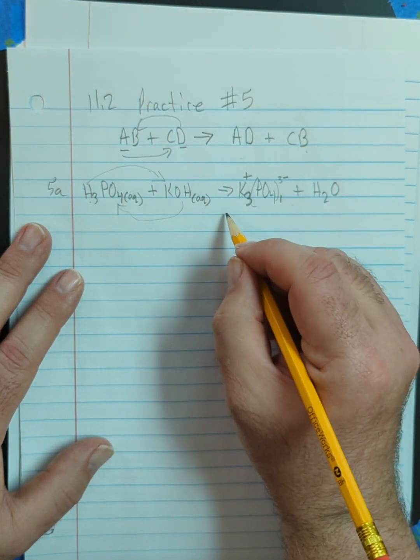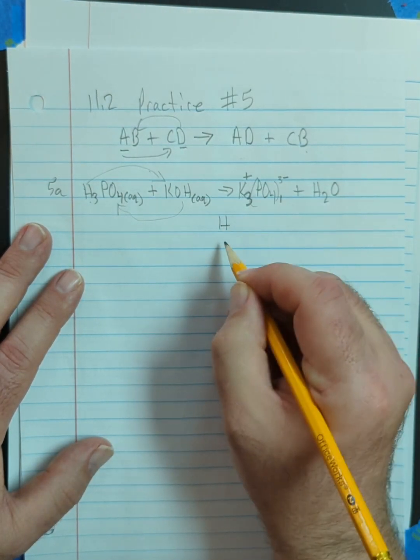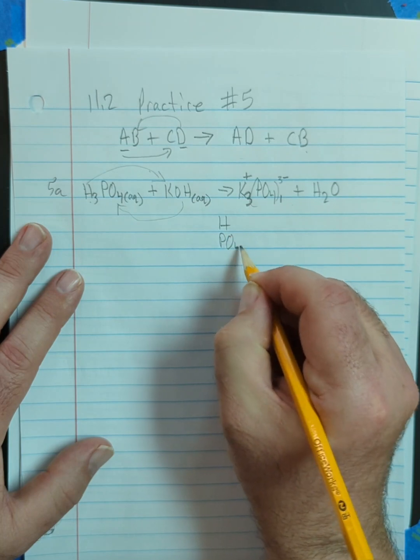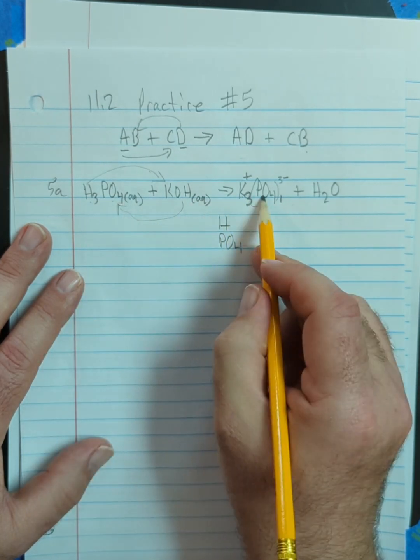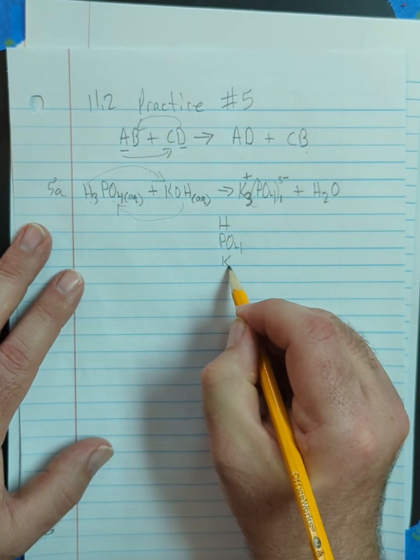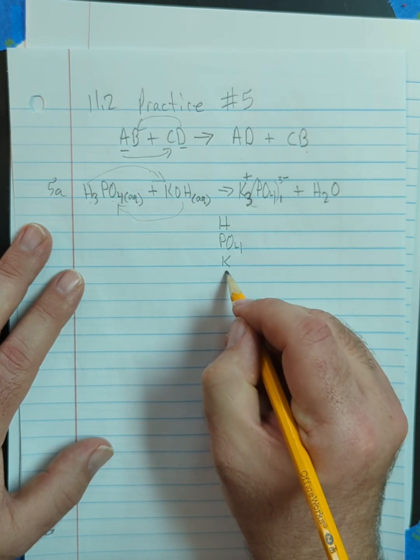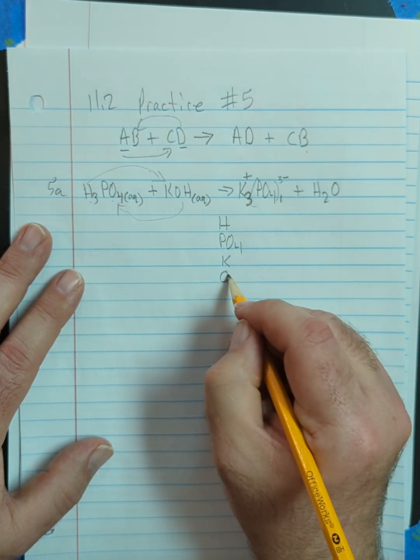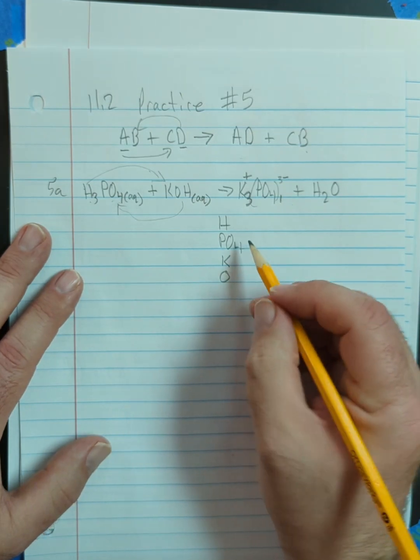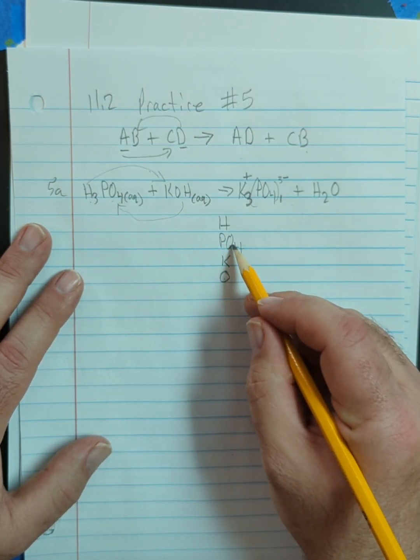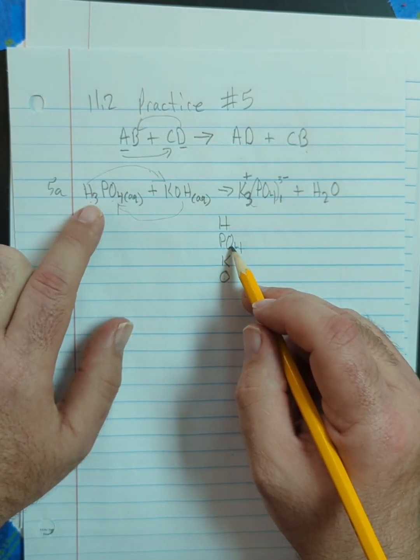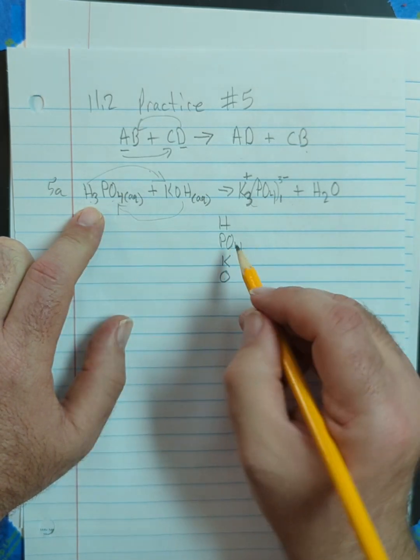So then we have to balance this. We have hydrogen, we have PO4 because it's the same on both sides. We have potassium, and we have oxygen. Now, since we have oxygen here, we're not going to count that as part of the PO4.